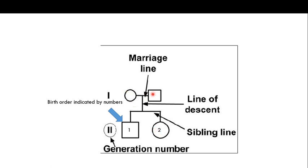Roman numerals shown on the side indicate generation number. The first Roman numeral represents the first generation, the second represents the second generation, and so on. Depending on the pedigree, you can have three, four, or five generations, and these Roman numerals will show you the generation number.